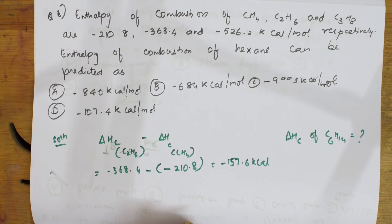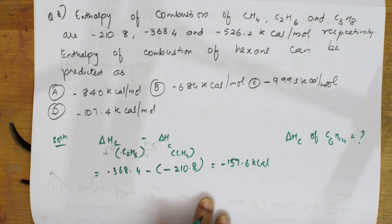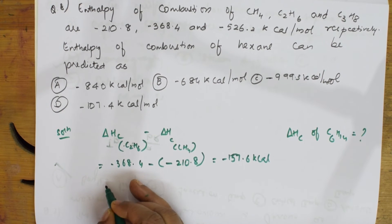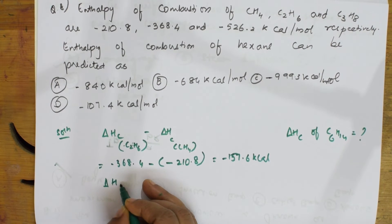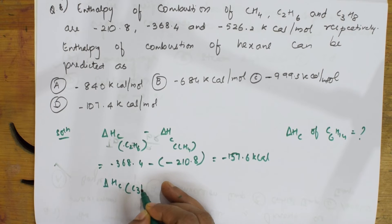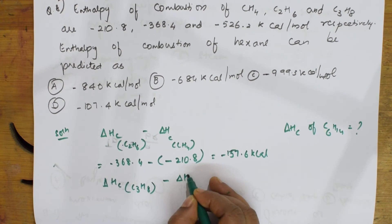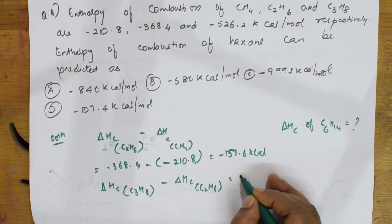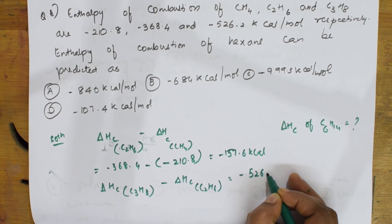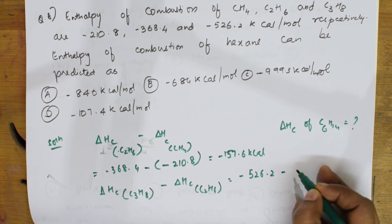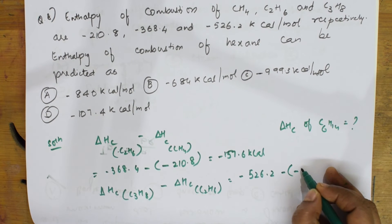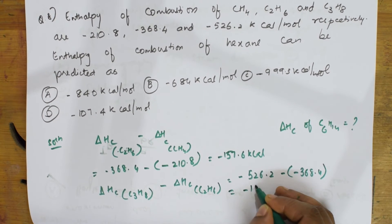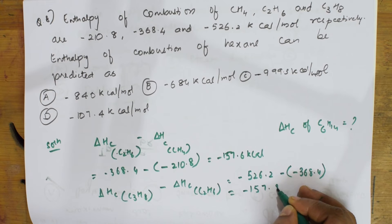Step two: take ΔH_c of propane (C₃H₈) minus ΔH_c of ethane (C₂H₆): −526.2 minus (−368.4) = −157.8 kcal.